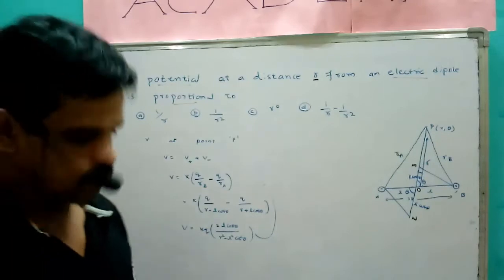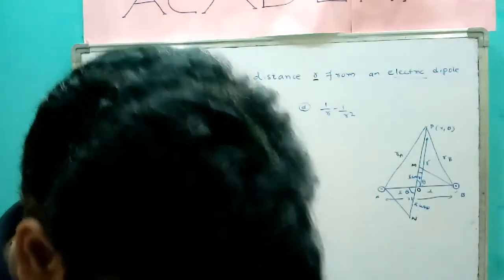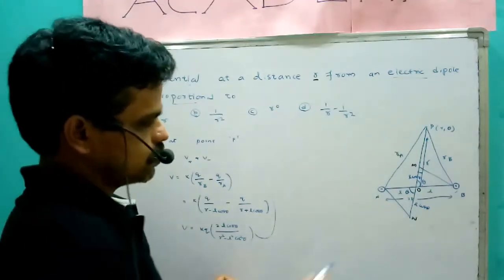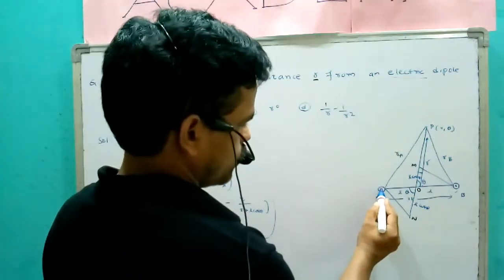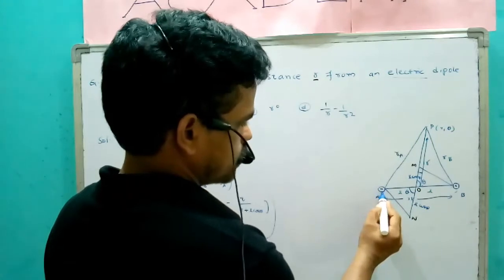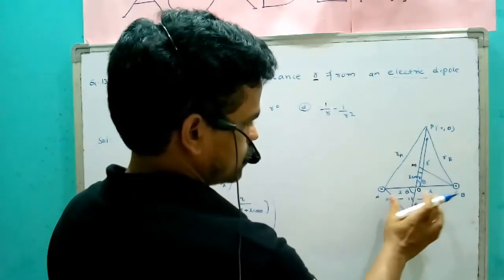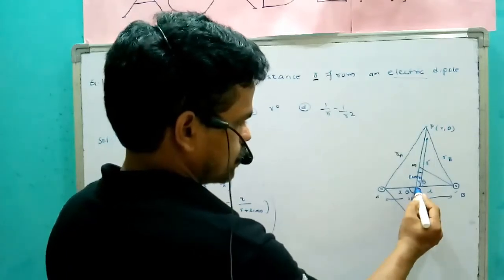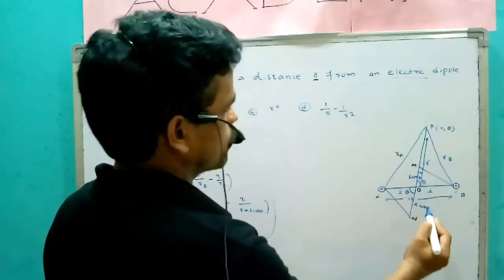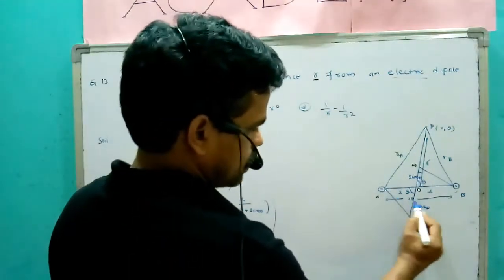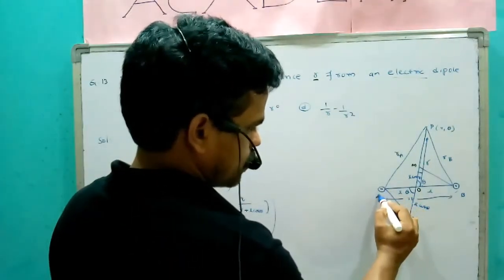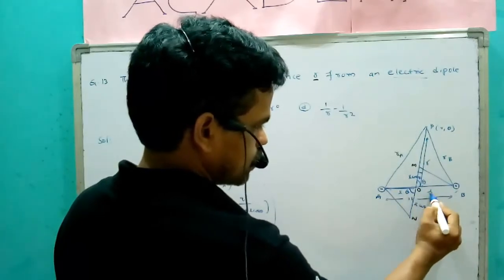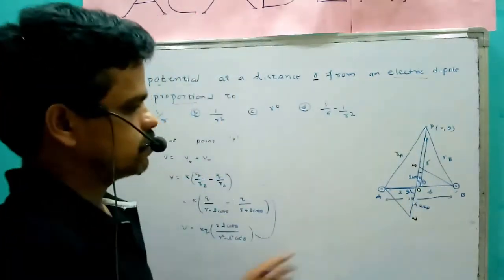There is a little bit of description here. This is an electric dipole. The electric dipole consists of a negative charge and a positive charge separated by a distance 2L. Here O is the midpoint of the dipole, so the total length is 2L — from A to O that is length L, and from O to B that is length L.